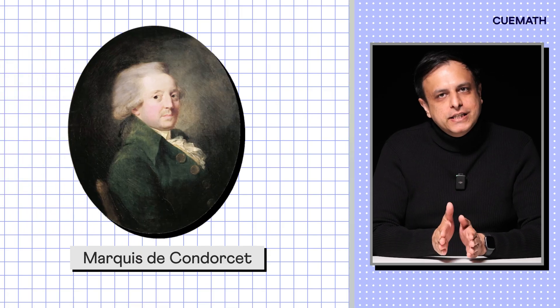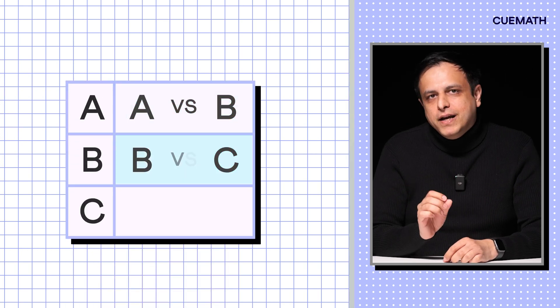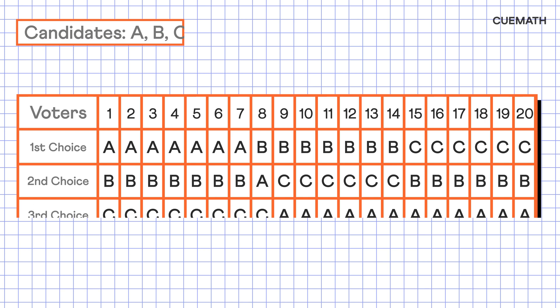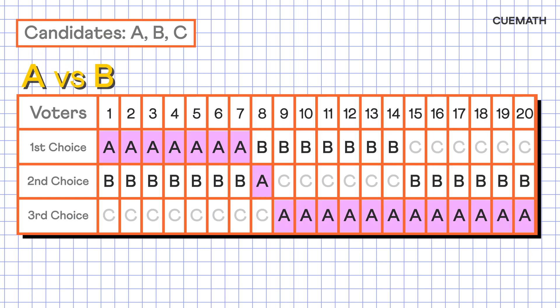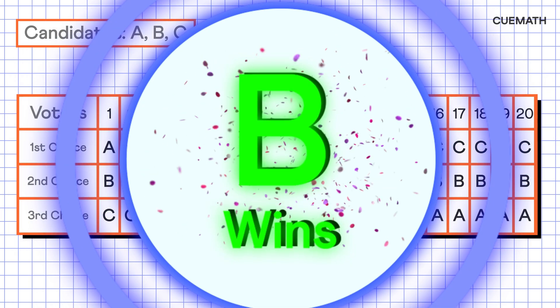To avoid such situations, a mathematician, Marquis de Condorcet proposed a new idea. Elect a candidate who would win in a head-to-head election against every other candidate. For example, in this case, if you compare B and A, B wins. In a contest between B and C, B wins again, making B the overall winner.